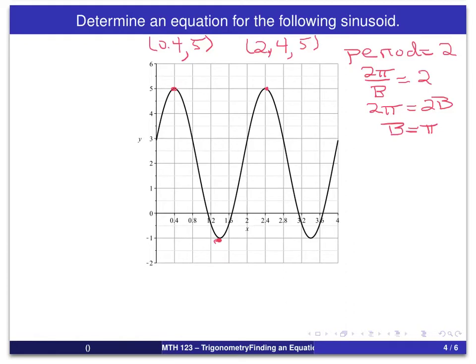And we can say, if we start from 0.4 and add half a period, which in this case would be 1, it comes out at 1.4.